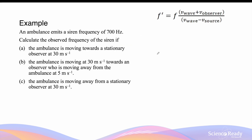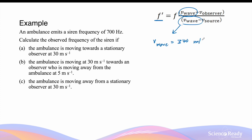Let's go through a few questions using this equation. An ambulance emits a siren frequency of 700 Hz — this is my original frequency unaffected by the Doppler effect. Calculate the observed frequency, that is the perceived frequency f dash, of the siren if the ambulance is moving towards the stationary observer at 30 m/s. The velocity of the wave in the numerator and denominator is the velocity of sound through air, which the NASA datasheet gives as 340 m/s. The velocity of the observer is 0, because the observer is stationary.